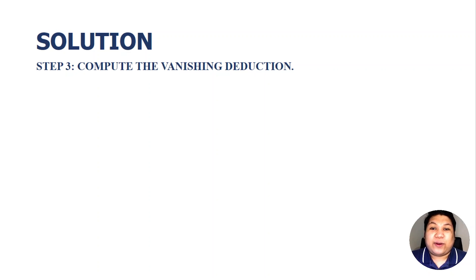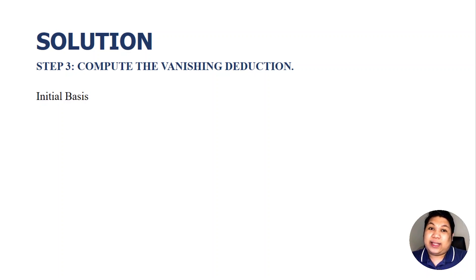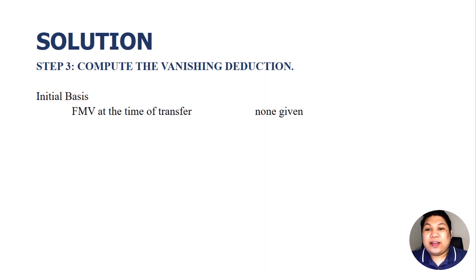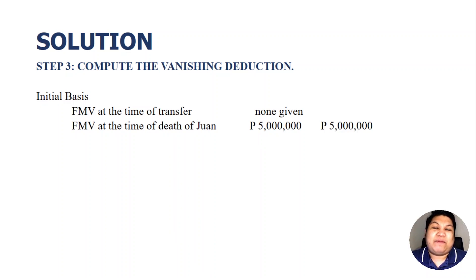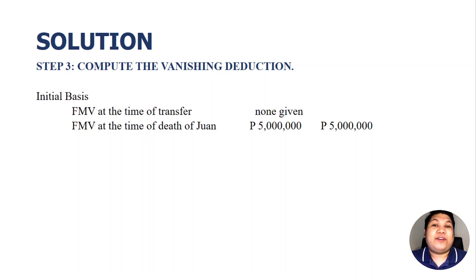Step 3: compute the vanishing deduction. First, identify the initial basis, which is the lower of the fair value at the time of transfer (one and a half years ago) or at the time of death (today). The problem is silent on the fair value at the time of transfer, and the fair value at the time of death is 5,000,000. So we use 5,000,000. If the problem is silent, we use that figure; but if there is a given data, you choose whichever is lower.